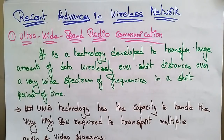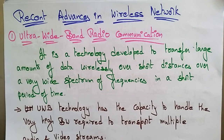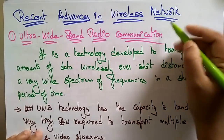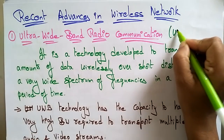Hi students, welcome back. Coming to the next topic in the subject of ad hoc networks: recent advances in wireless networks. So far you have seen the different ad hoc wireless networks, routing protocols for each network, sensor networks, and hybrid wireless networks. Now coming to the recent advances in wireless networks — Ultra Wide Band radio communication, which we call UWB.